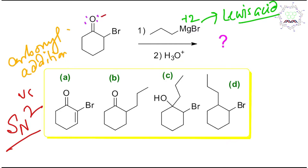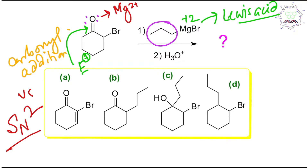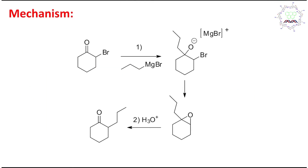We have seen that the Grignard reagent's Mg2+ can act as a Lewis acid. So in the first step, this magnesium will get attached to the carbonyl oxygen. Mg2+ increases the electrophilicity of the carbonyl carbon, making it more electrophilic. Consequently, the nucleophile will attack this carbonyl carbon via the nucleophilic addition pathway.